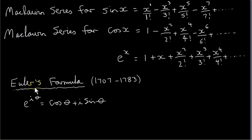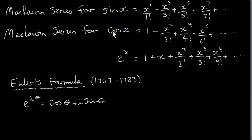A very famous relation in mathematics is known as Euler's formula, named after Leonard Euler, whose dates are 1707 to 1783. It states that e to the power of i times theta is cos theta plus i sine theta. So we can connect the exponential function to these trigonometric functions, and that connection involves the number i.